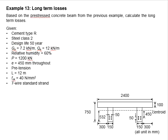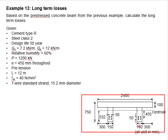The relative humidity is 60 percent, the prestressing force is 1200 kilonewton, the eccentricity of the tendon is 450 throughout the section. It is a pretensioned member, the beam span is 12 meters, f_ck is 40 newton per mm squared, and seven-wire standard strand is being used with diameter of 15.2 mm. The dimensions of the section are given here and the number of tendons are shown here.